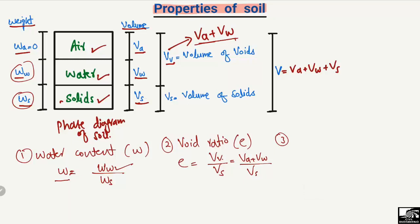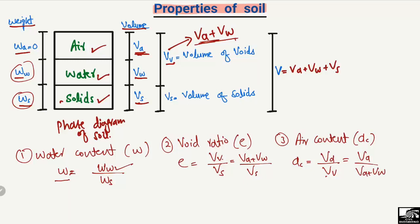The third property is the air content. Air content is represented by AC and it is equal to the volume of air divided by the volume of the voids. The volume of air is Va, and the volume of the voids is the combination of air and water — so it is Va divided by (Va plus Vw). By dividing these two quantities we can find the air content of the soil sample.